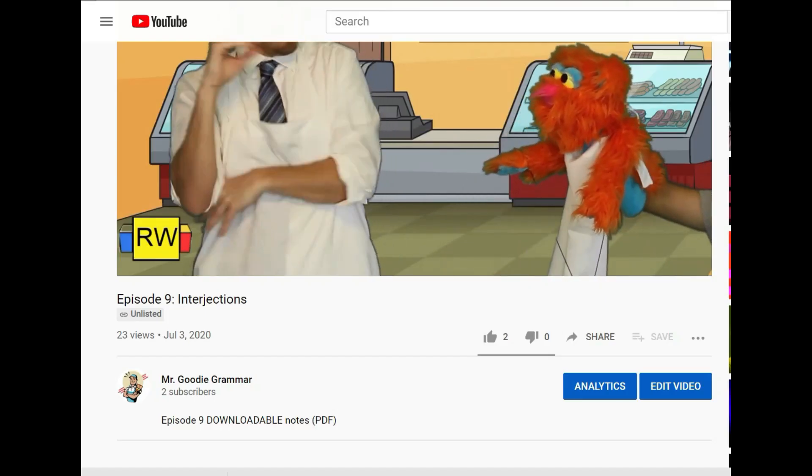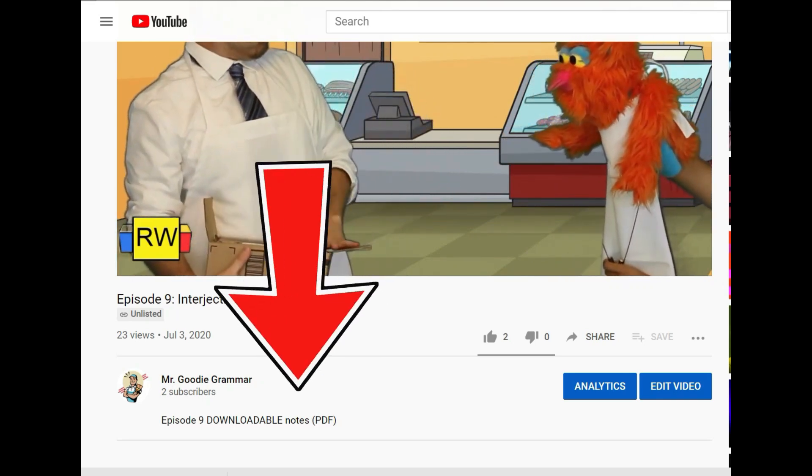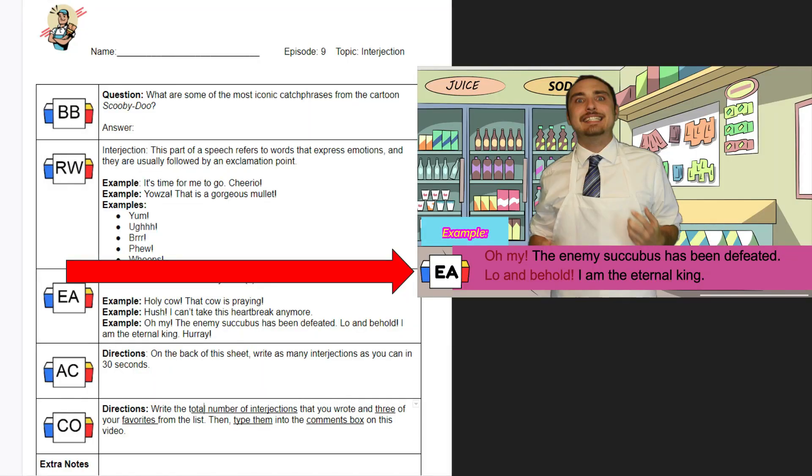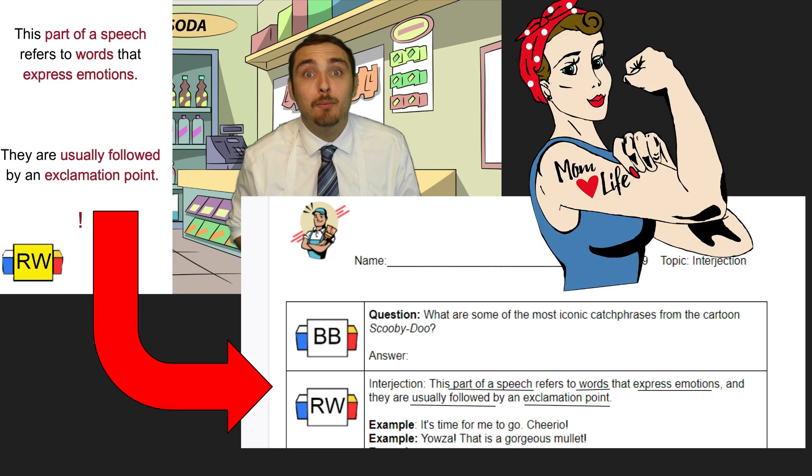But before we begin, make sure to download the free guided notes in the description box below. The notes and the episode have matching badges that help you follow along with each section. Also, underline any maroon text that appears in the episode to identify key concepts and key terms. It's the shopping list your mom always forgot to take to the grocery store.